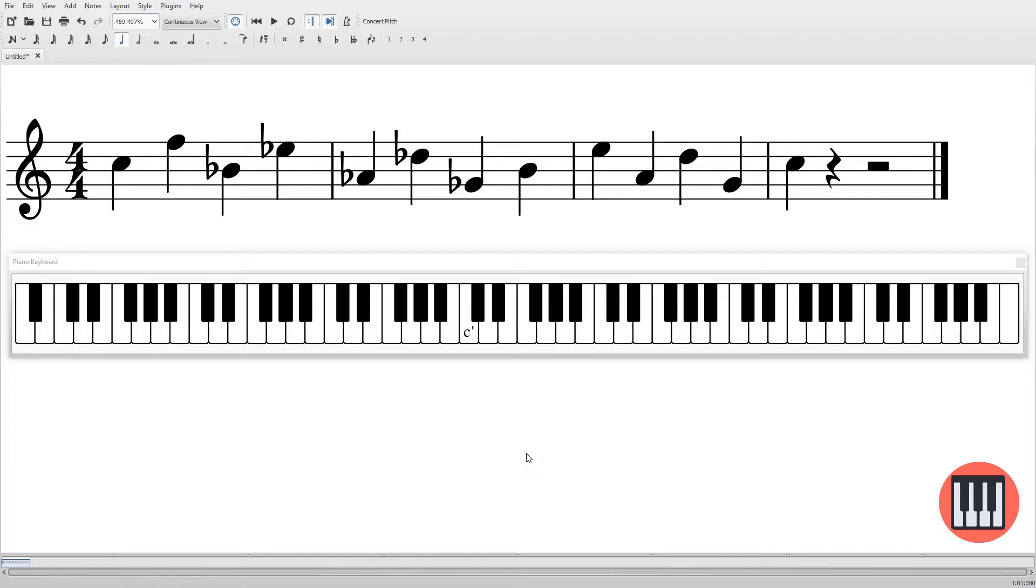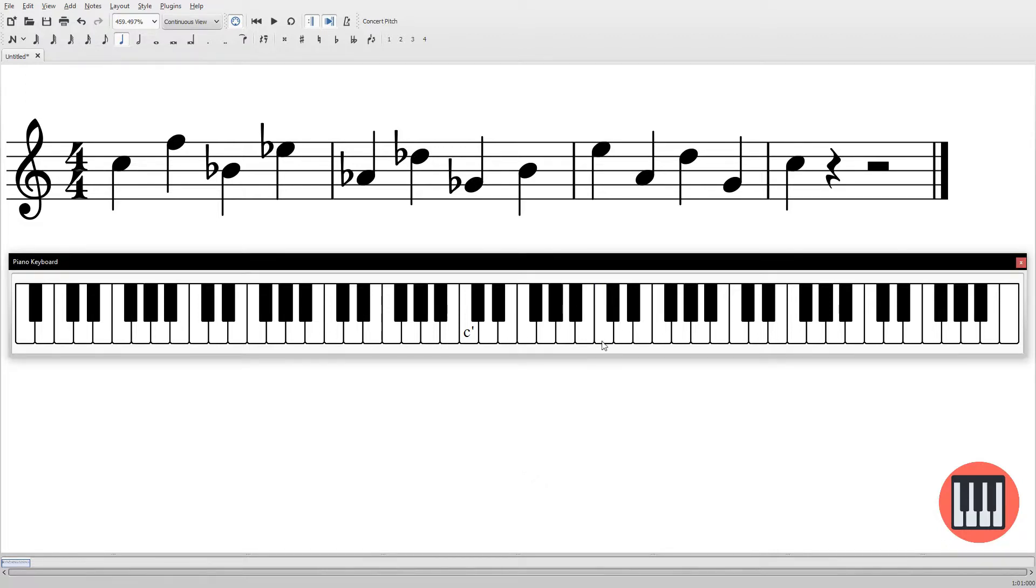But just at a glance, the cycle of fourths is essentially a way of traversing every single one of the 12 tones by the same interval each time. In this case, by the interval of a perfect fourth. So a perfect fourth is five semitones.